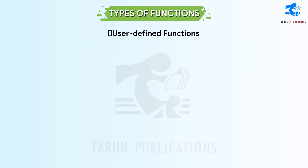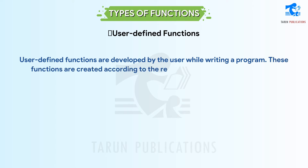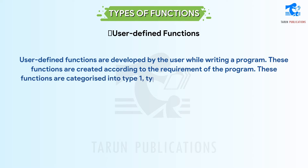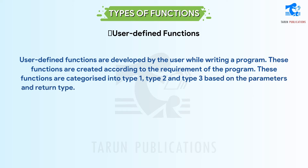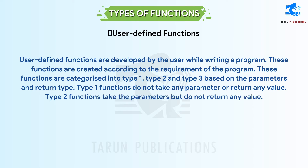User-defined functions are developed by the user while writing a program. These functions are created according to the requirement of the program. They are categorized into type 1, type 2, and type 3 based on parameters and return type. Type 1 functions do not take any parameter or return any value. Type 2 functions take parameters but do not return any value. Type 3 functions take parameters and return a value as well.